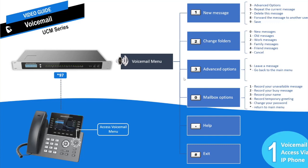Option 3 is for advanced options — when the user presses 5, the voicemail menu will prompt the user to leave a message for another user. Option 0 for mailbox options allows the user to customize settings: press 1 to record their unavailable message, 2 to record busy message, 3 to record the user name, 4 to record a temporary greeting, and 5 to change the voicemail password. Press star for help and pound to exit the voicemail menu.